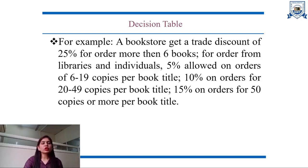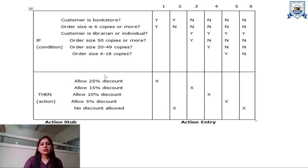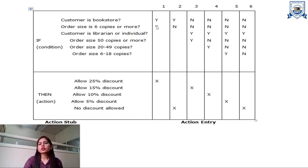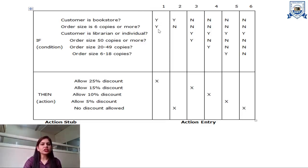We need to build a decision table for this problem. All the conditions are specified in the 'if' column and the actions are specified in the 'then' column. When a particular condition is met, it is indicated by a Y sign, and the corresponding action to be taken is specified by the cross sign. For example, if the customer is a bookstore and the order size is 6 copies or more, then a discount of 25% will be given.